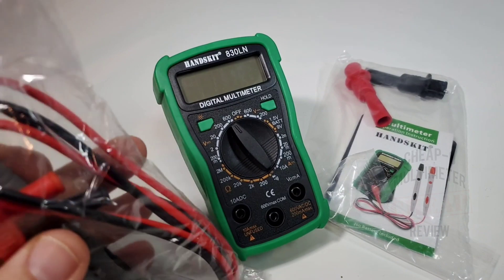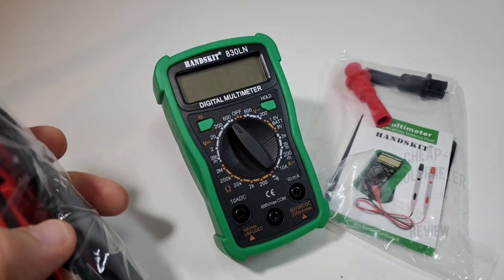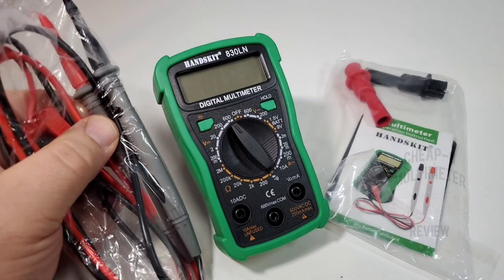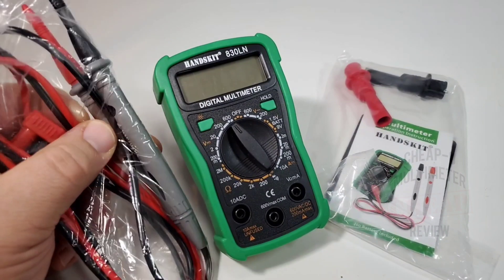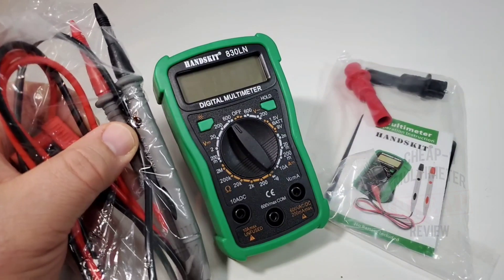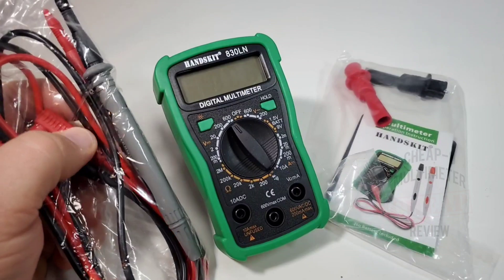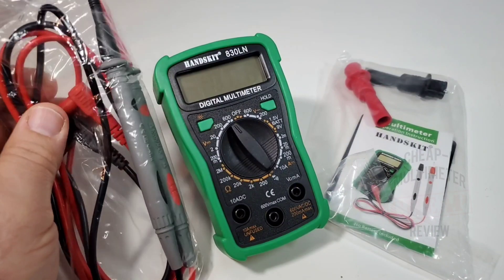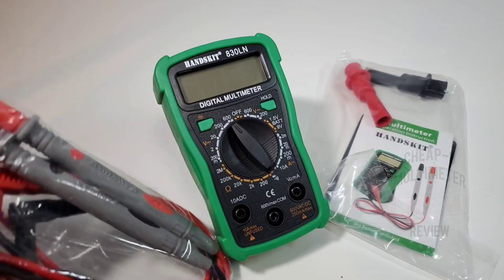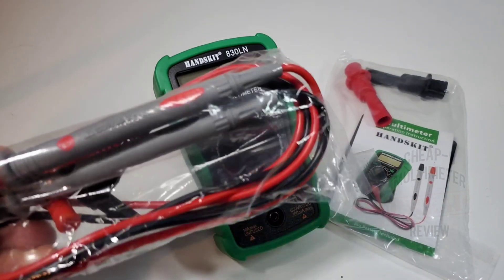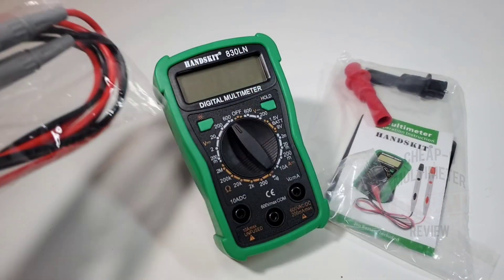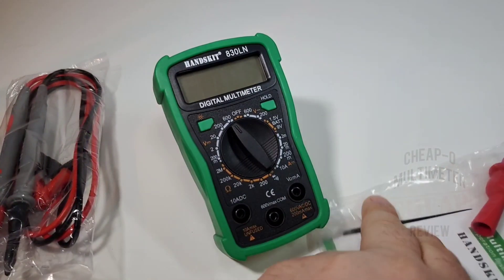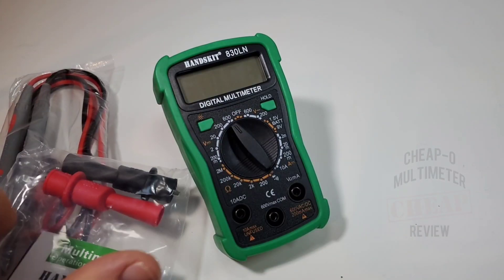Now let's take a look first at those test leads. Yeah they are rather big for such a small meter, I was a little bit surprised to see this actually. A good maybe one and a half times the size of the multimeter itself. Normally small meters get small test leads but hey this was not the case.